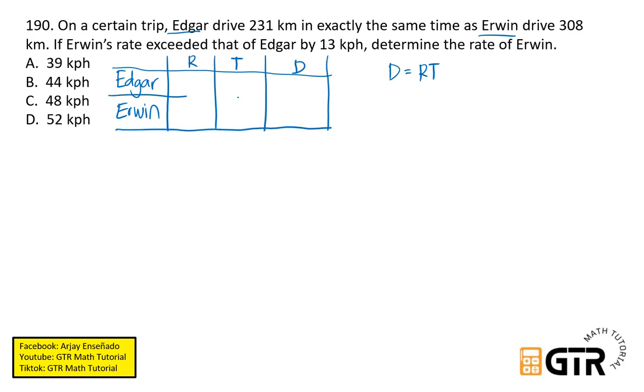So ano ba yung mga given natin? Mga given natin sa problem ay, Edgar drove 231 kilometers. So yun yung distance na nakover ni Edgar. 231 kilometers in exactly the same time as Erwin drove 308. So kay Erwin ay 308.